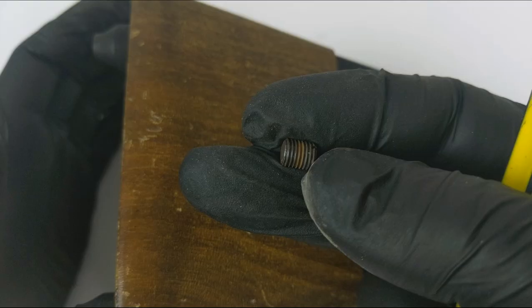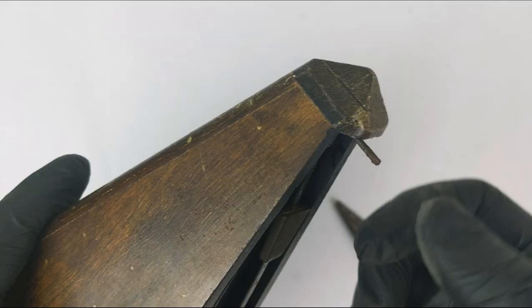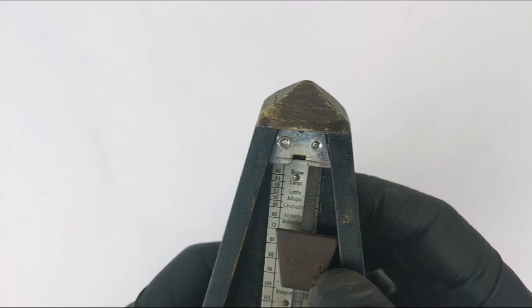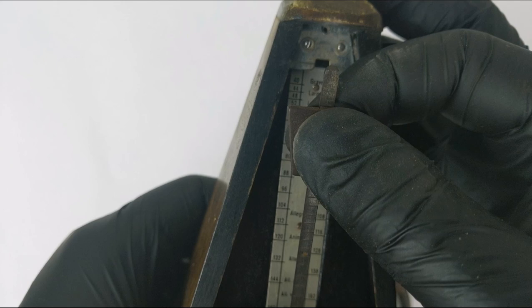Strangely enough, this grub screw has been threaded directly into the timber. This secondary moveable weight controls how fast the pendulum oscillates back and forth.